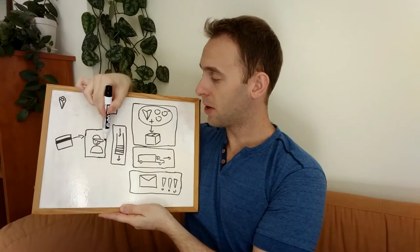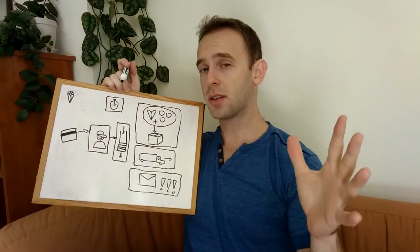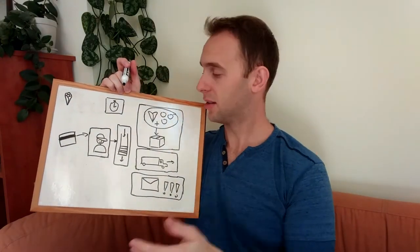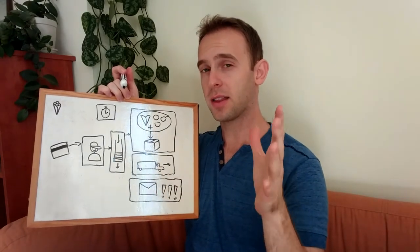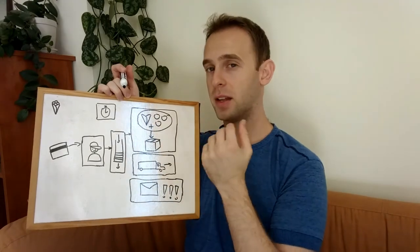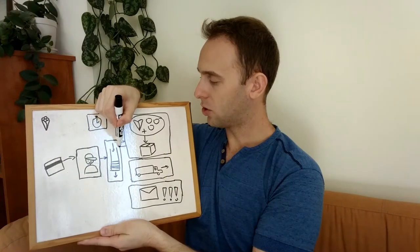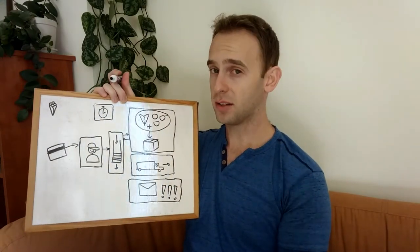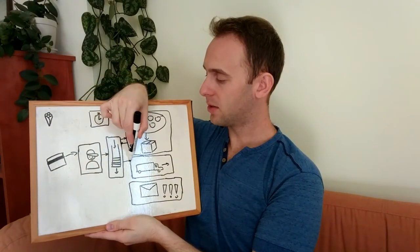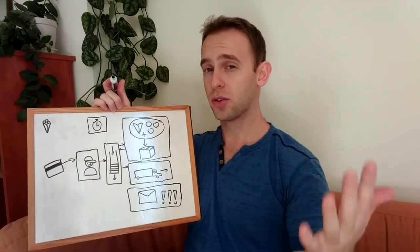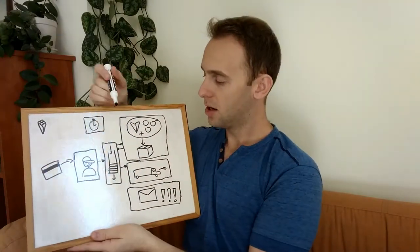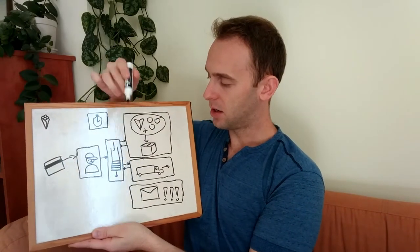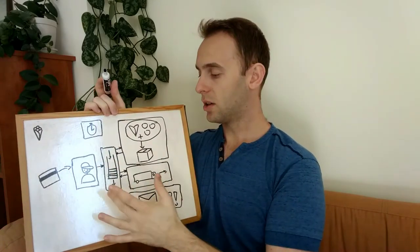When a new order arrives, the ordering manager sends the order to a queue for orders that need to be packaged. The packaging manager is subscribed to this queue, pulls the order, and starts working on it. When he packages it, he puts the packaged order into a queue for orders that need to be sent to the customer. The post office service is subscribed to that queue, pulls the order, handles it, sends it to the customer, and when finished, sets it into an 'order has been sent to customer' queue.